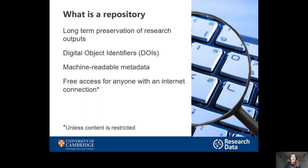Usually if data is in a repository, anyone with an internet connection will be able to download it straight away. Although some repositories enable you to do things a bit differently, perhaps putting the metadata out openly available online but asking people to request a dataset from you. This is an option if you have sensitive data or other data you can't share, but it's preferable as a default for data to be free to download for anyone.